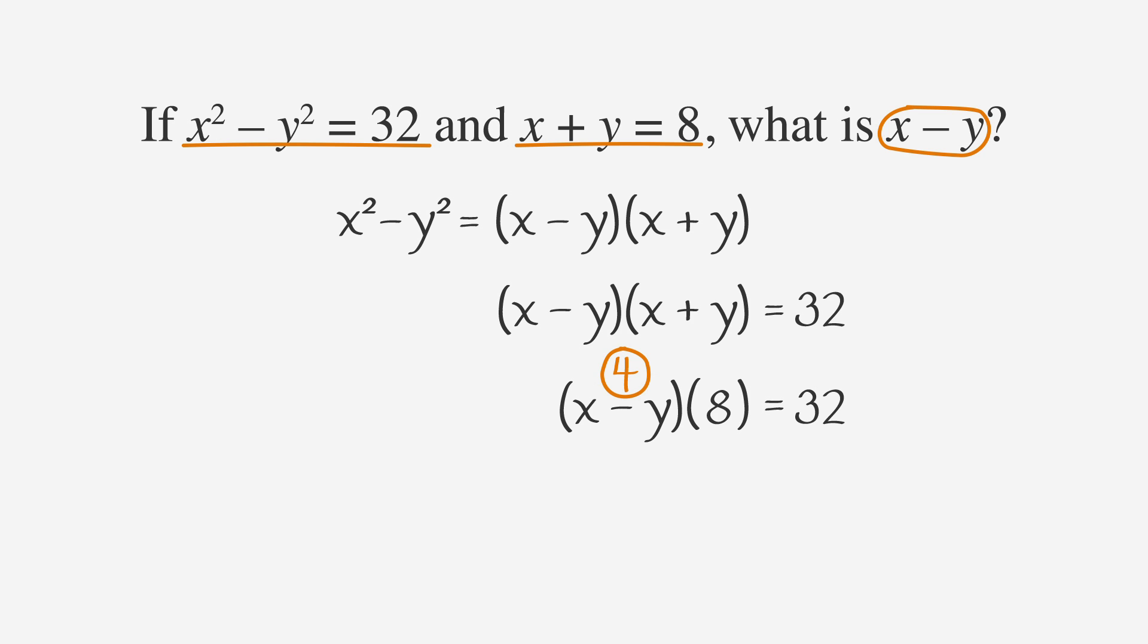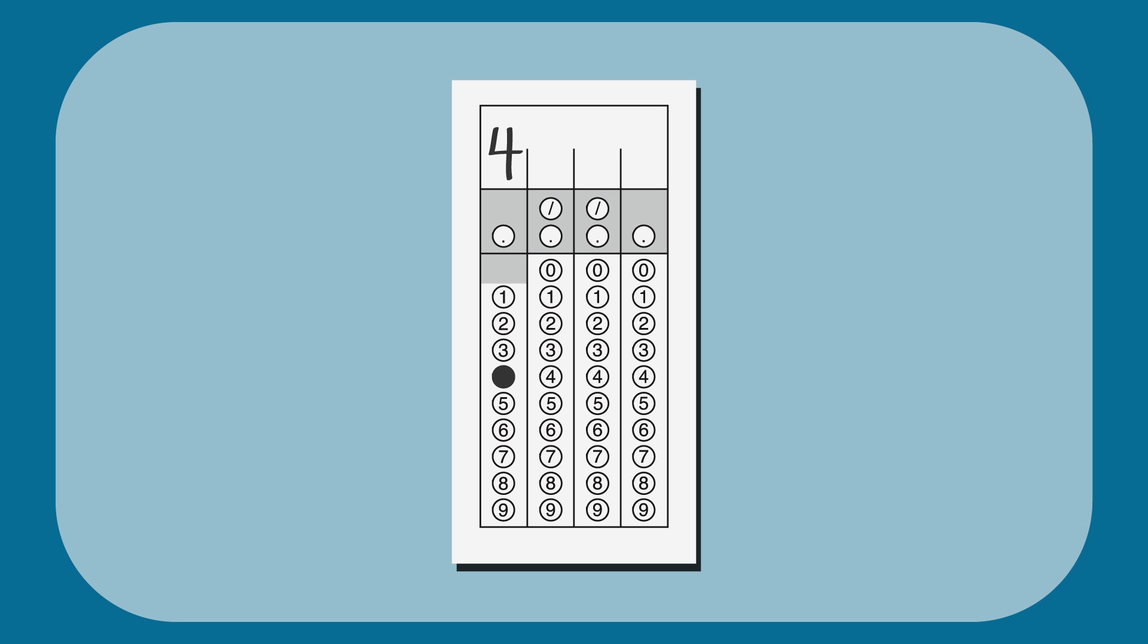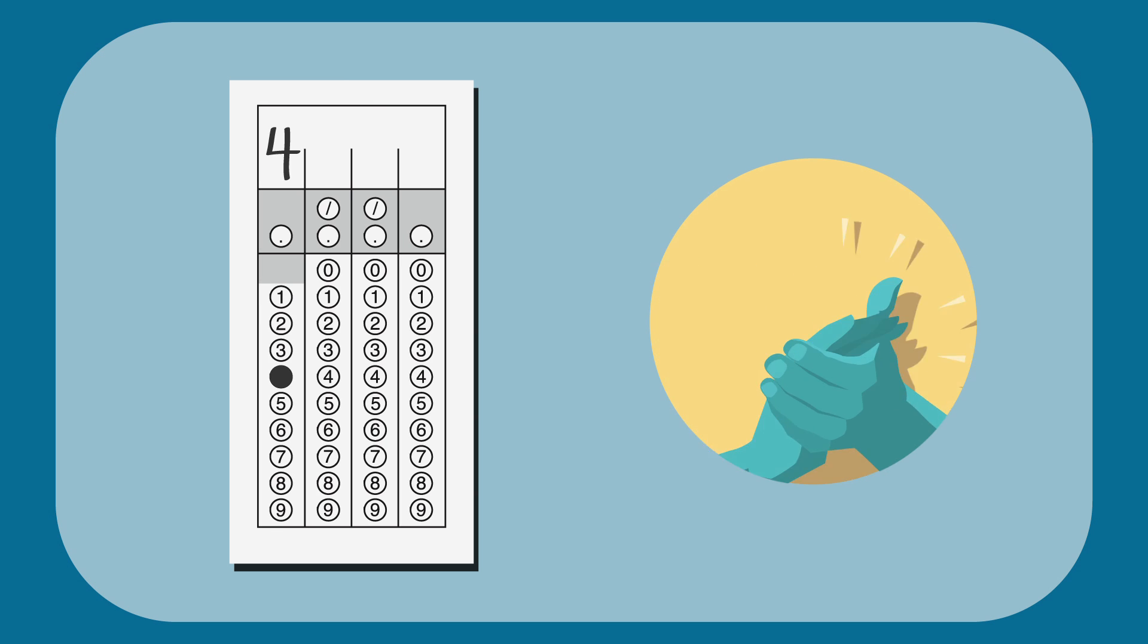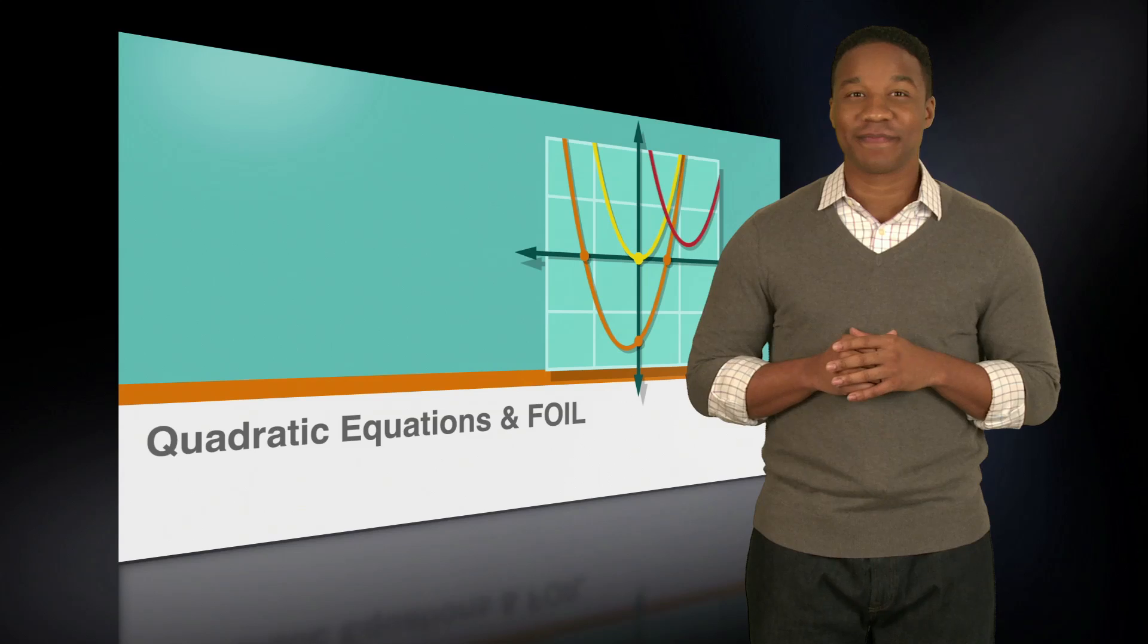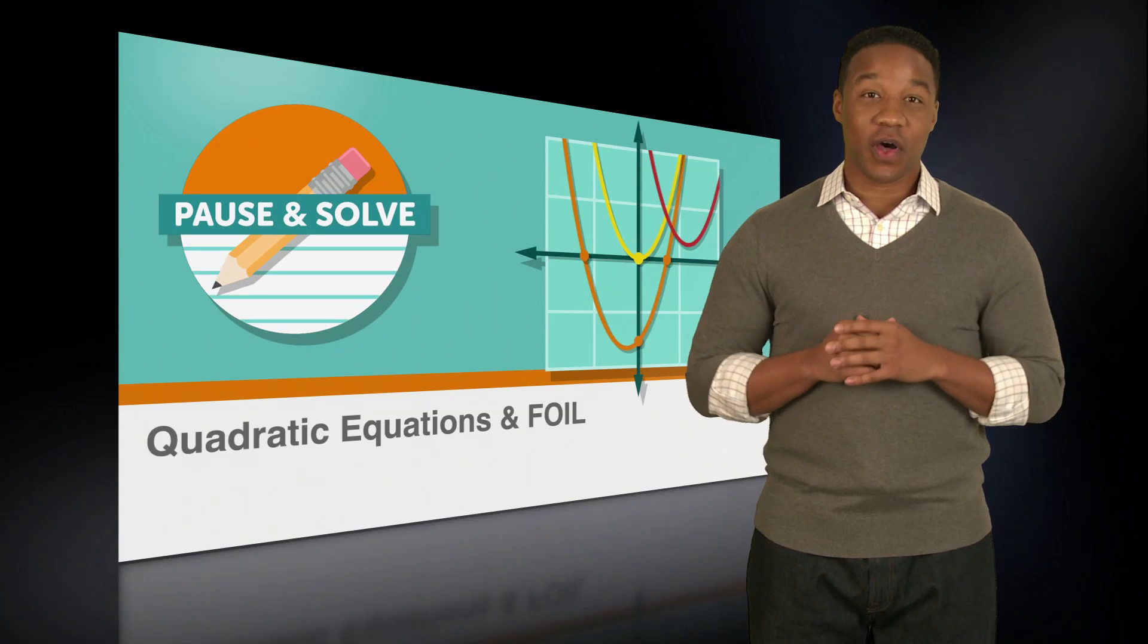If we didn't remember that 4 times 8 equals 32, we could always set up an equation to solve for x minus y. Either way, we have found that x minus y equals 4. Fill in the answer and you're done. No need to solve for x. Now give yourself a round of dignified applause for hanging in there like a champ. All right, we just covered the basic skills for solving quadratic formulas that you'll definitely need for similar problems on the SAT.